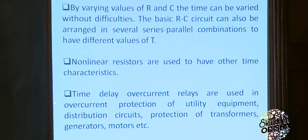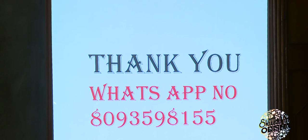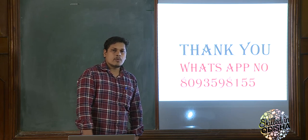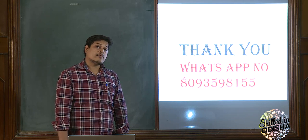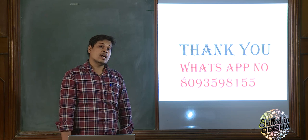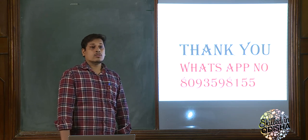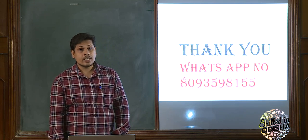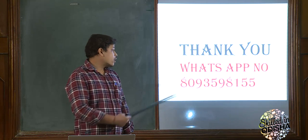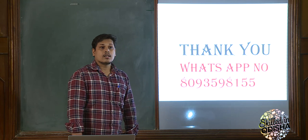Time delay overcurrent relays are used in overcurrent protection of utility equipment, distribution circuits, protection of transformers, generators, motors, etc. This is all about the two types of relays that will come in your exam. The advantages of static relay and the IDMT relay are the most important topics. As this is one-way communication, send your queries through WhatsApp number 8093-598-155. Thank you.